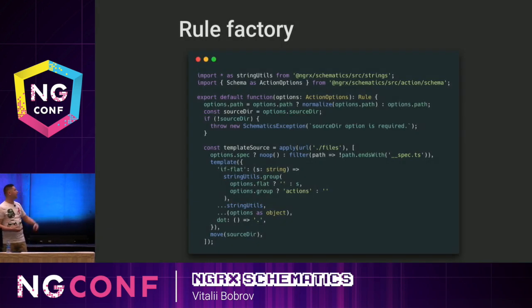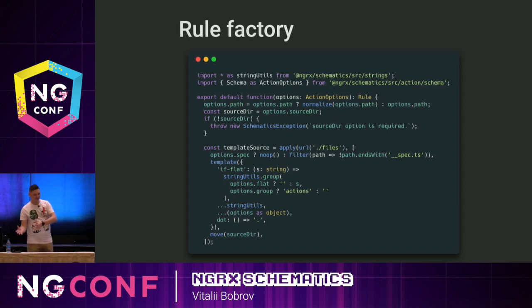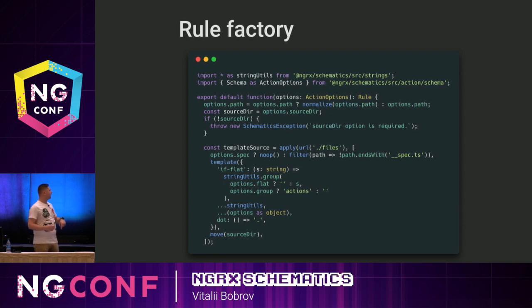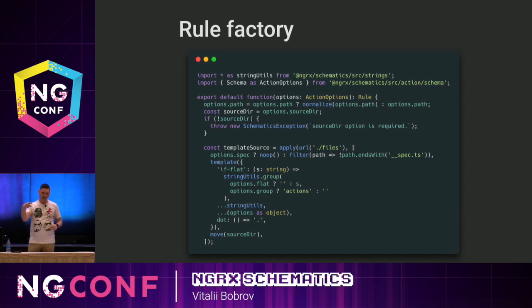So the main factory file for our schematic — in our case I just copy-pasted the factory from the NGRX action schematic to reuse it, because I only want to change the templates. In general, this schematic factory is just a function that returns a rule describing how to change our file system. We're parsing our arguments and passing them to templates. Also, here we are filtering templates — if the user specifies a spec boolean argument, we're going to create a spec file for them; if not, we do nothing.